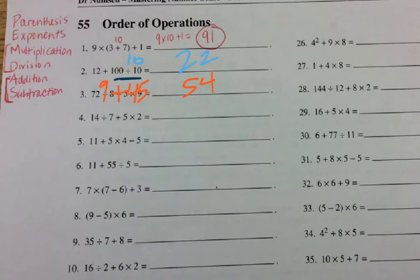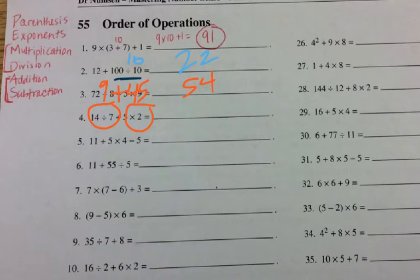For number four, I have division, addition, and then multiplication. I'm going to do the division part first, and then add that to the multiplication answer. So 14 divided by 7 would be 2. I'm going to add that to the quantity of 5 times 2, which is 10. So I would get 12.